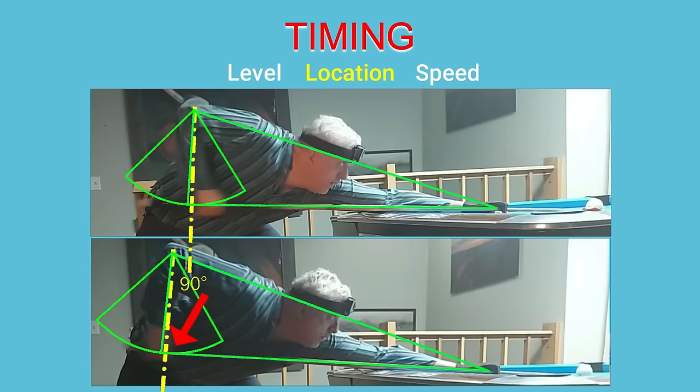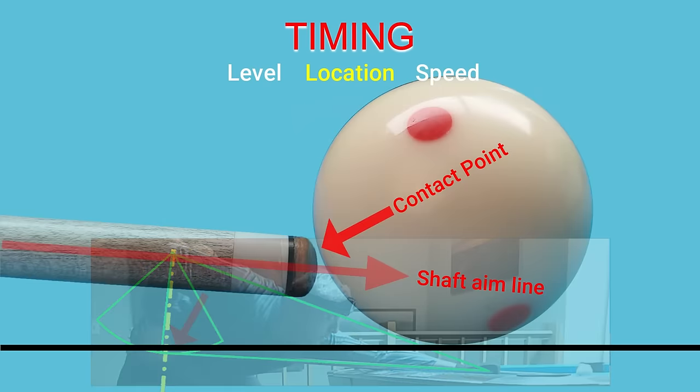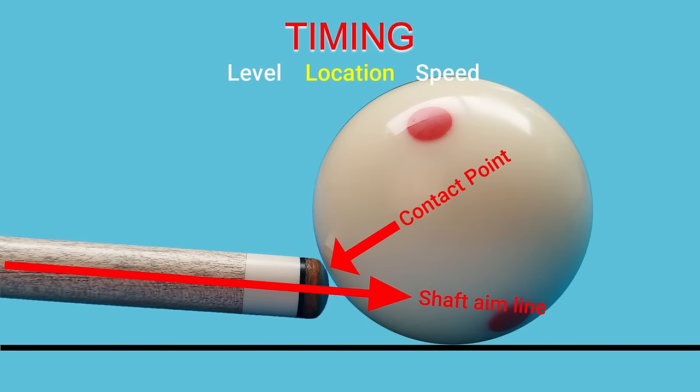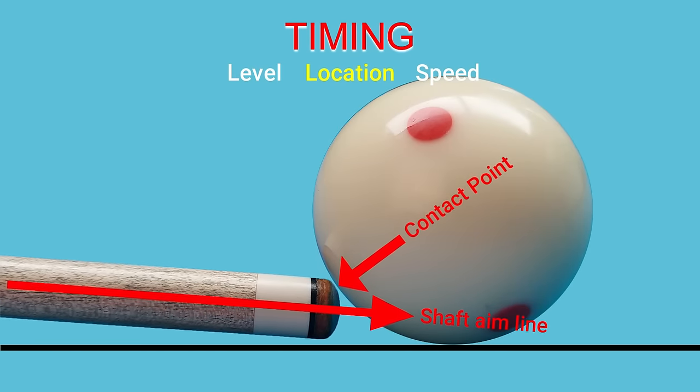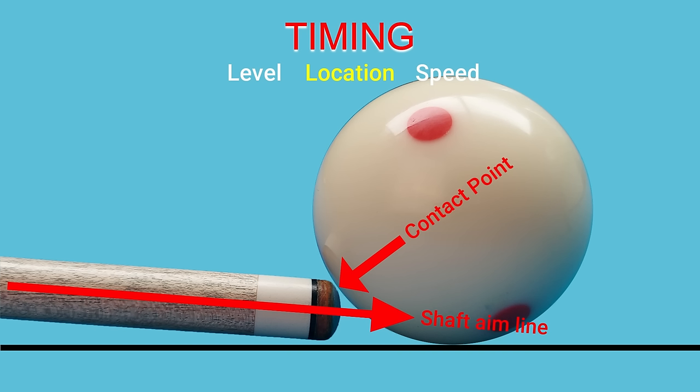Practice aiming as low as possible in this fashion, and you just might be surprised at how low you can address the bottom of the cue ball without miscuing. The third ingredient of timing, and the most interesting, is speed.